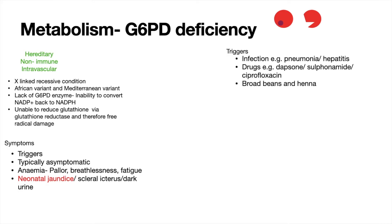The first trigger is infections, because they can drive free radical production up. Bacterial infections like pneumonia or viral infections like hepatitis are the key ones to look out for. There are also certain drugs that can trigger G6PD deficiency problems, including Dapsone, which can be used for dermatitis herpetiformis.